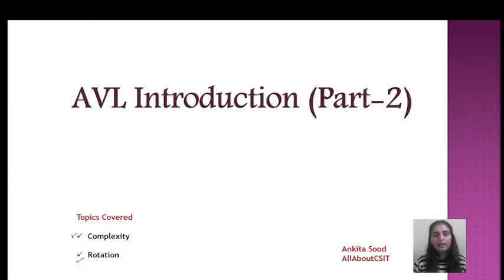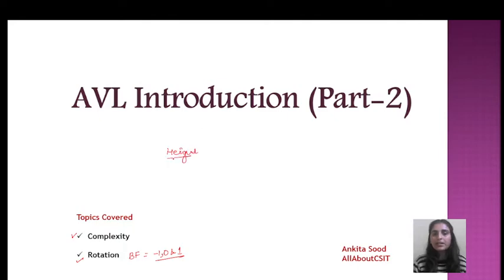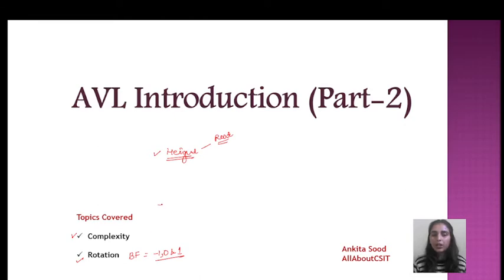In case of AVL, we perform rotation only if the balance factor is other than minus 1, 0, and 1. As we saw in the previous introduction video, AVL tree is a height balancing tree — the major focus is on the height of nodes, always checked from the root node. The height range is from minus 1, 0, and 1 only. If we have any value other than these three numbers, we perform rotation.